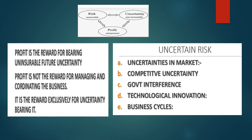According to Knight, profit is the reward for bearing uninsurable future uncertainty. Profit is not the reward for managing and coordinating the business — it is the reward exclusively for uncertainty bearing.